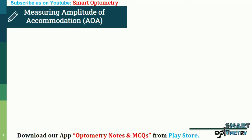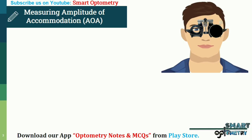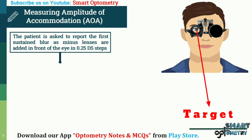Measuring amplitude of accommodation: Request the patient to sit comfortably. Ask the patient to wear their spectacles or other optical correction and occlude the left eye. The patient's attention is directed towards the best corrected near visual acuity target at 40 cm testing distance. The patient is asked to report the first sustained blur as minus lenses are added in front of the eye in 0.25 diopter steps.